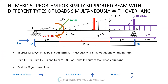Here we are considering a numerical problem for an overhanging beam — a beam of 11 meters which is supported at A by a hinge support, at B it is a roller support, and having an overhang of 3 meters. There are four types of loads on it. First is an inclined load of 10 kilo-newton in the vertical plane at 45 degrees.